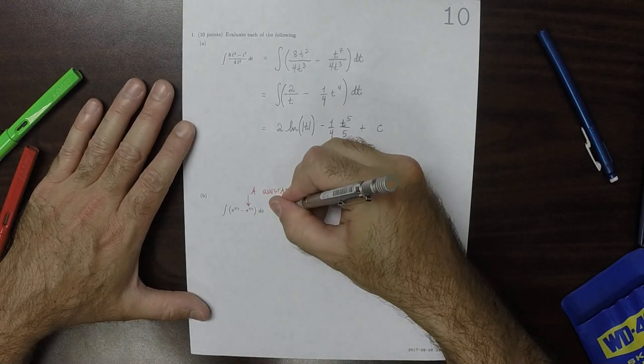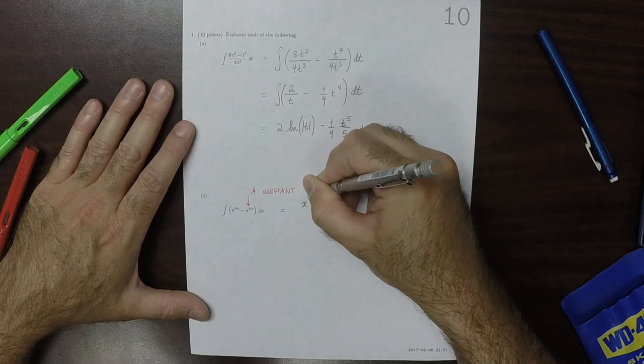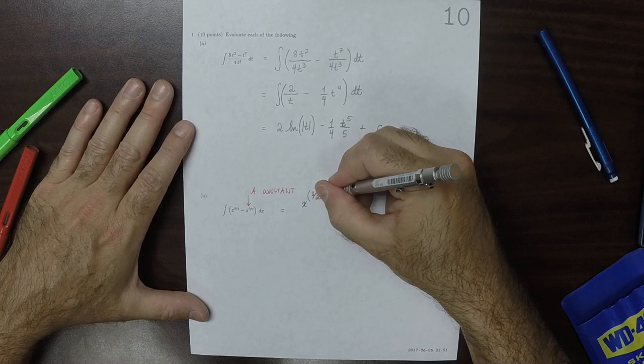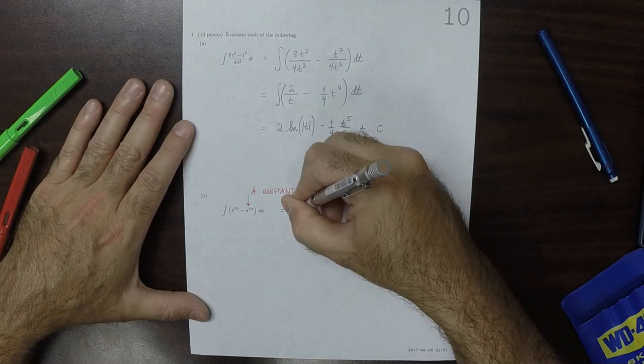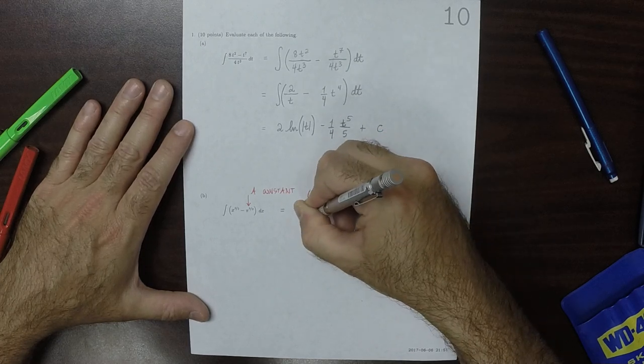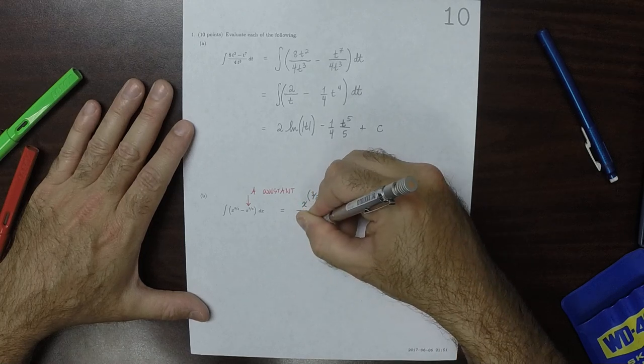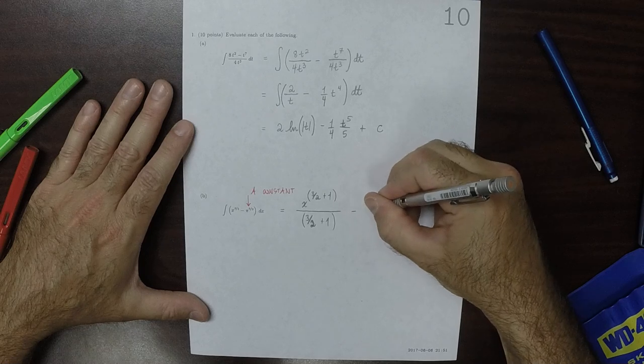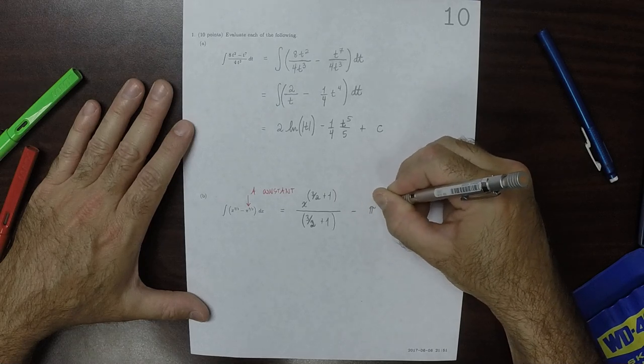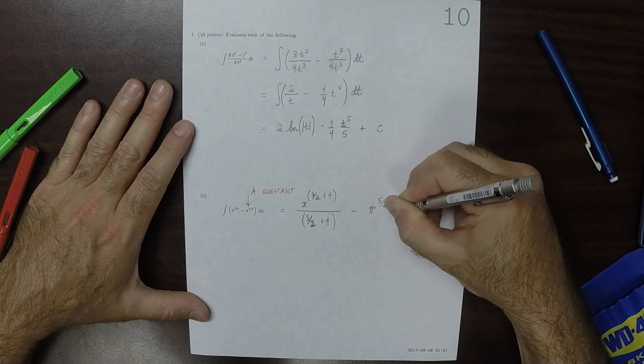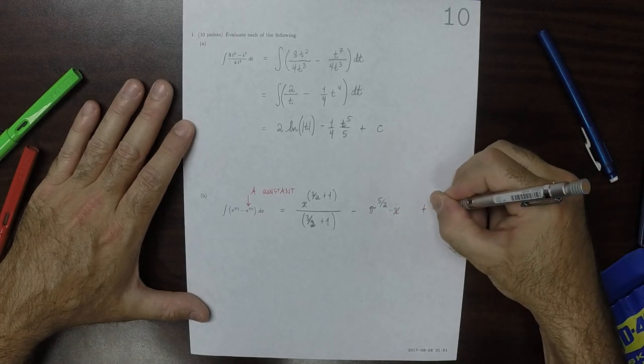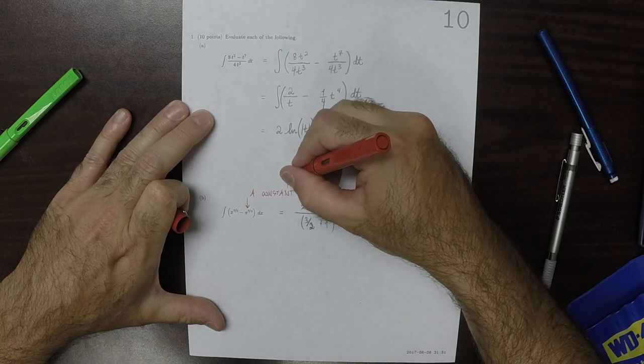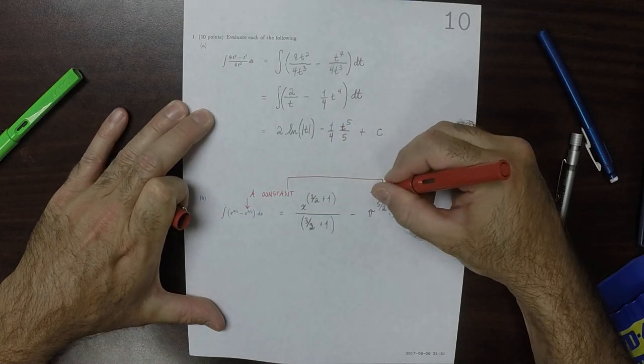Pi to 5 halves is a constant, so the answer is x to 3 halves add 1, and then over 3 halves add 1, and then minus pi to 5 halves x, and then plus a constant. So that's a constant, and as a result, that's what this looks like.